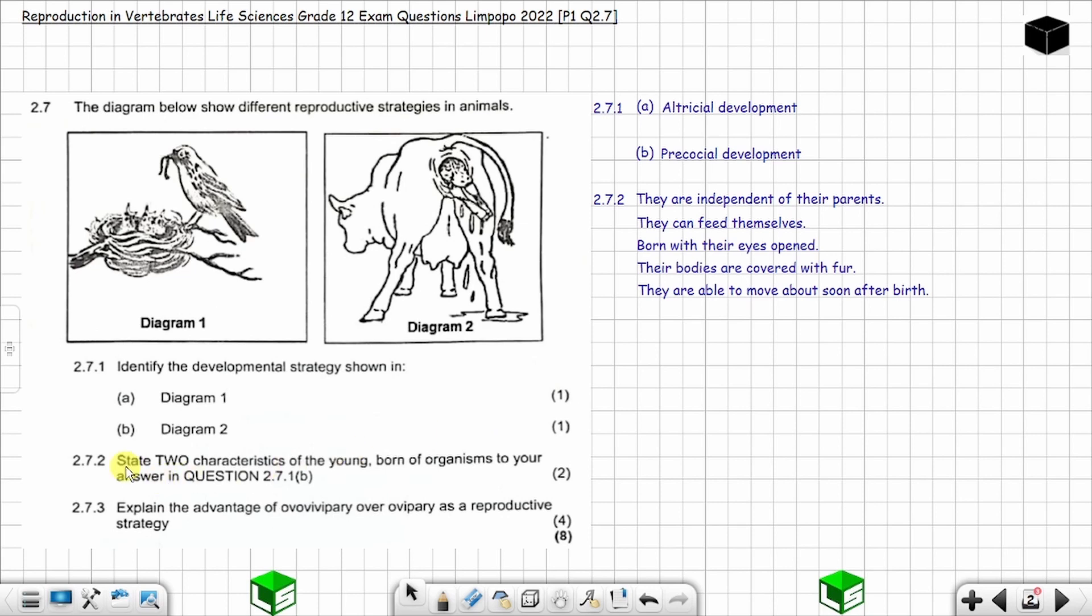Now question 2.7.3: explain the advantage of ovovivipary over ovipary as a reproductive strategy. The advantage of ovovivipary over ovipary is that the chance of survival is greater in ovovivipary since the eggs are protected within the mother's body.